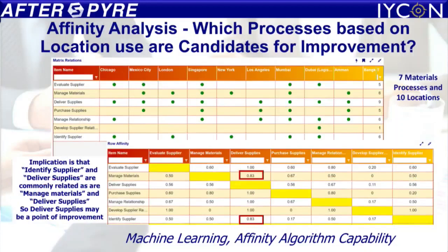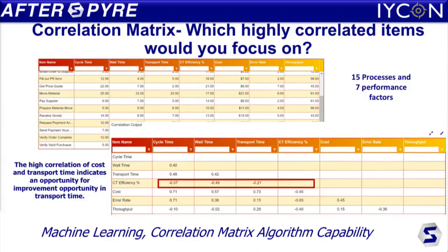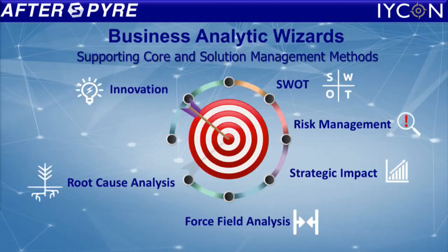We also have an affinity analysis, based on machine learning, to answer questions such as which processes based on which location are candidates for improvement. The correlation matrix functionality allows you to understand, for example, a process example where you can see cycle time, wait time, and transport time, which are negatively impacting efficiency. These, again, are candidates for improvement.